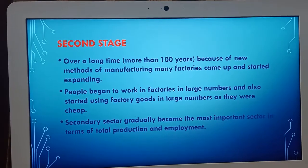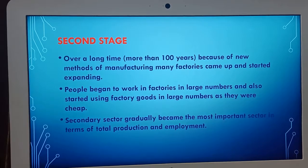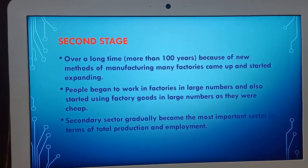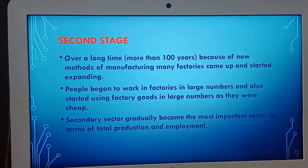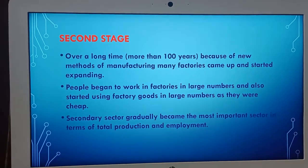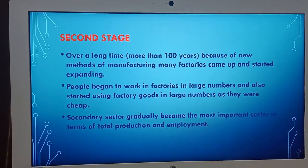Over a long time, especially because of new methods of manufacturing being introduced, factories came up and started expanding. People began to work in factories in large numbers and also started using factory goods in large numbers as they were cheap. The secondary sector gradually became the most important sector in terms of total production and employment.